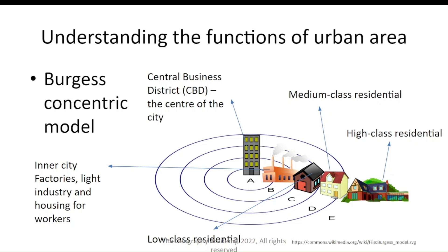Low class residential sits just outside the industrial zone. Further out from that you might have medium class residential — people who have the means to travel to work or aren't directly connected with manufacturing industry. Then we have high class residential even further out, not needing immediate access to industrial areas and having more transportation options. That's a standard model of a city.